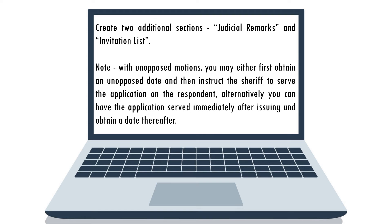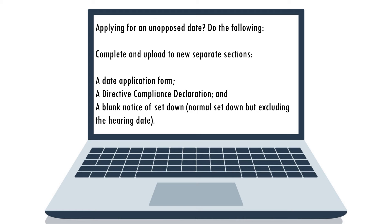Before you proceed further, the practice directives require that two additional sections be created: Judicial Remarks and Invitation List. Create these sections. Take note that with unopposed motions, you may either first obtain an unopposed date and then instruct the sheriff to serve the application on the respondent, or alternatively you can have the application served immediately after issuing and obtain a date thereafter. In the latter instance, you will need to serve a notice of set down once an unopposed date has been allocated. For purposes of this episode, we will first obtain a date and then have the application served.